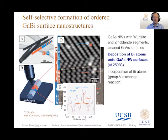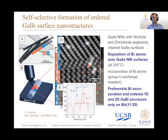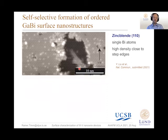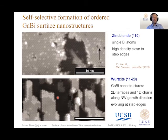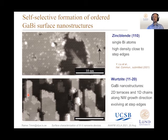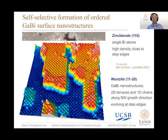If we zoom in further, we see that these bismuth atoms replace arsenic atoms and are incorporated into the matrix. But this is not the same in zinc blende or wurtzite areas — we have different types of incorporation with preferential incorporation at the wurtzite. In the zinc blende segment, the bismuth atoms are more or less randomly distributed, clustering more towards the step edges. But in the wurtzite segment, we see very different behavior: the bismuth atoms like to form two-dimensional islands along surface steps — a kind of self-selective formation of ordered gallium bismuth surface nanostructures.